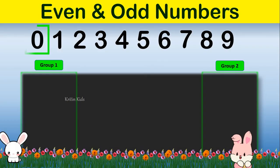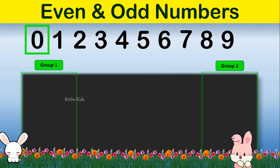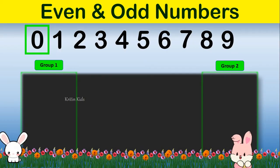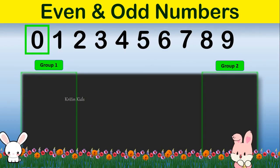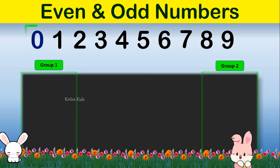Let's start with number 0. Here we can see we don't have any items, meaning both the groups are having 0 items, but they are equal. So we can say 0 is an even number.